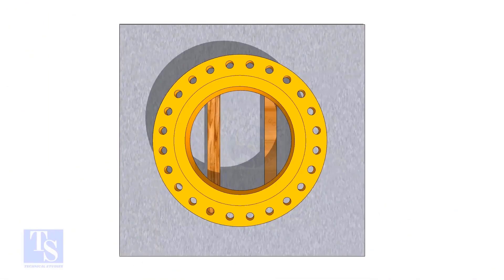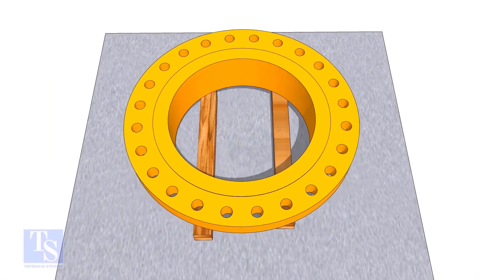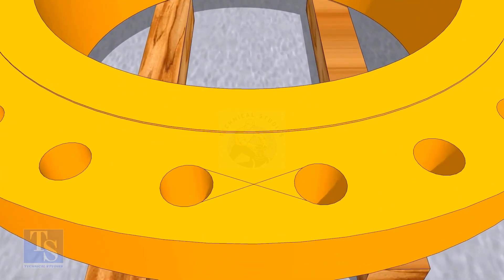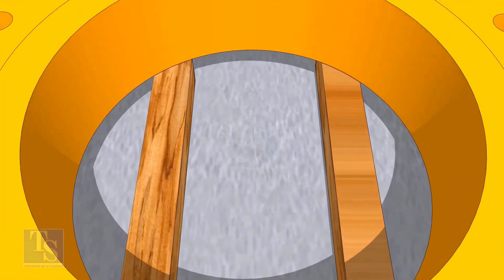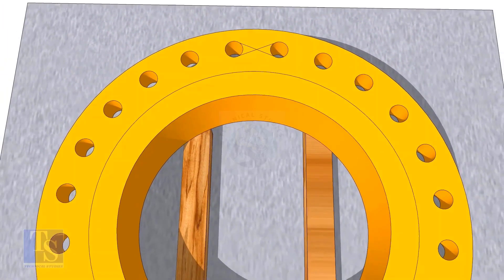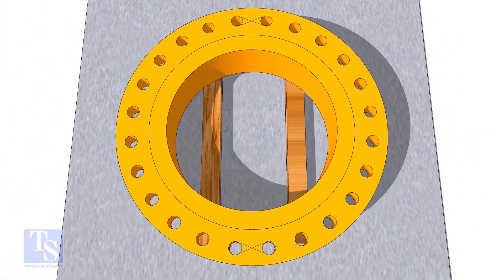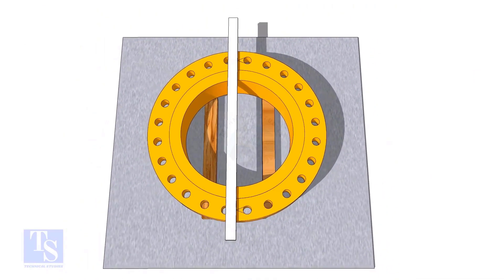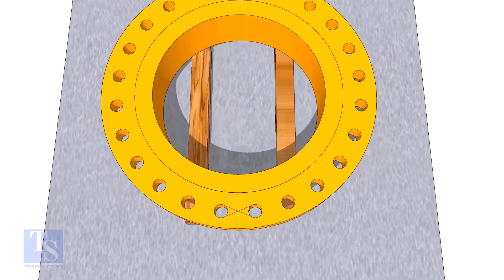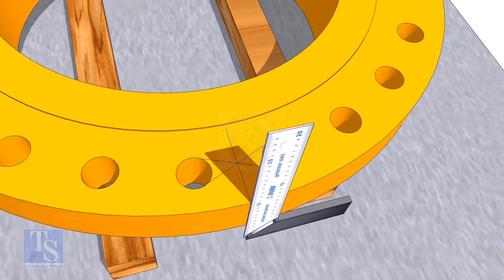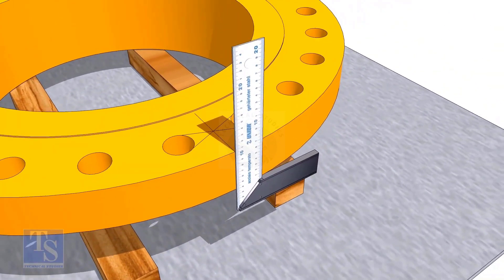In the second method, you need to mark the center line of the flange. Draw tangential lines on two adjacent holes on opposite sides. Draw a line as shown. Transfer the center line to the side of the flange.